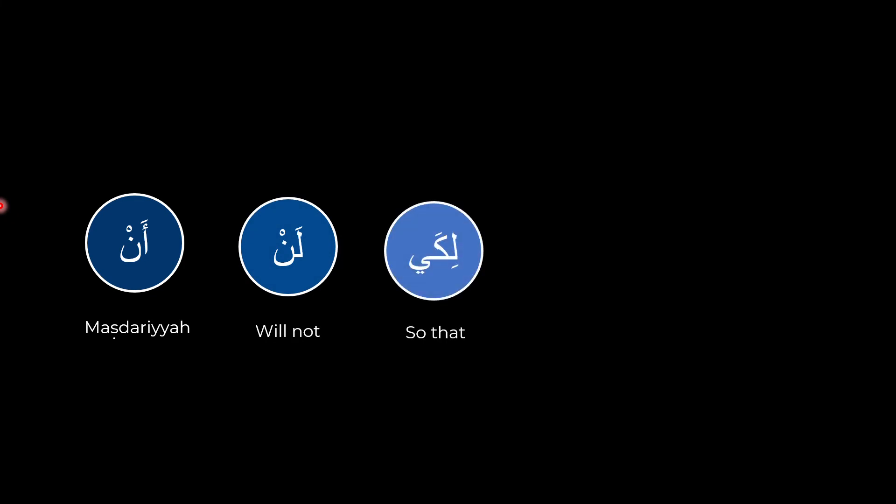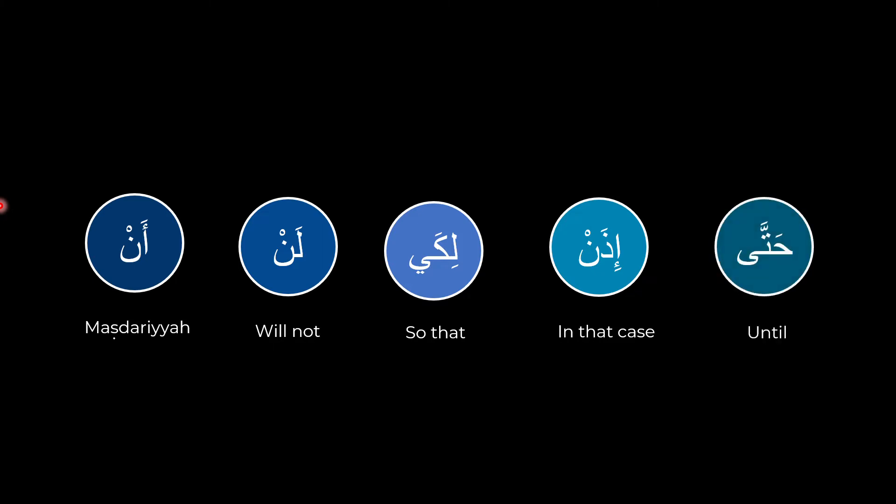What exactly are the hurufu al-nasibah? There are five in total. The first is an-mastariyya. The second is lan, which has the meaning of 'will not.' The third is likay, which has the meaning of 'so that.' The fourth is idhan, which has the meaning of 'in that case.' And the fifth is hatta, which means 'until.'